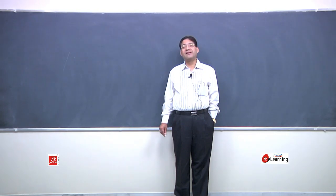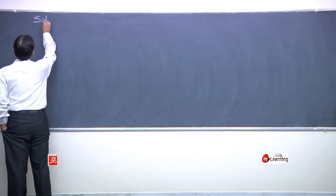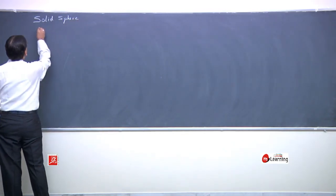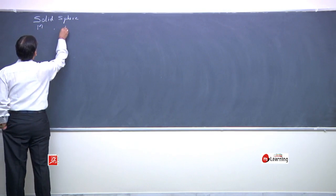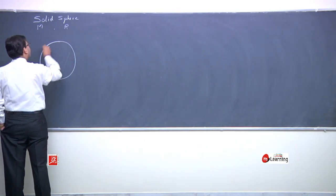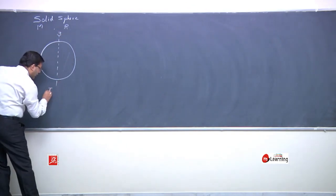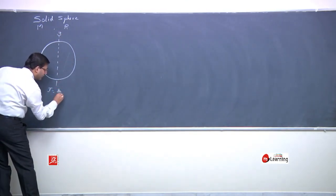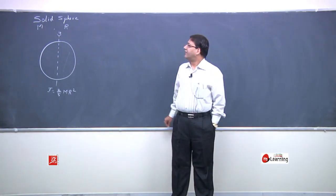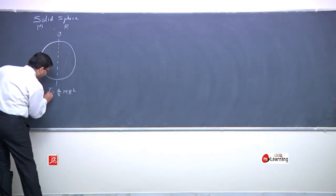So we are done with the theory. For a solid sphere, we have determined the moment of inertia about its axis, that is 2/5 mr². This is an axis passing through the center of mass.